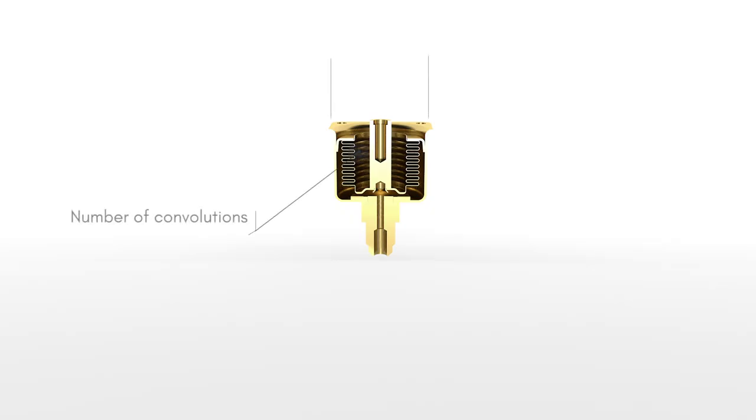To do that, you'll need to pay attention to the number of convolutions, the wall thickness, and the outside diameter. These factors determine the bellows' mean effective area and pressure response.